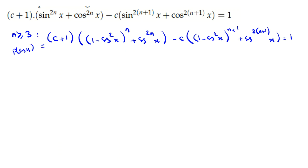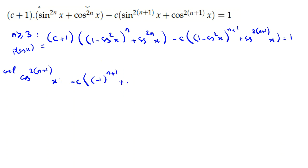Since cos x can take infinitely many values, we match all coefficients. First, the leading term cos^(2n+1)x: the coefficient is 0 from the left expansion minus c times (-1)^(n+1) plus 1 from the cos^(2n+1) term. Since n ≥ 3, this is not constant so it must equal zero. This gives us: either c = 0, or (-1)^(n+1) = -1, i.e., n+1 is odd, so n is even.